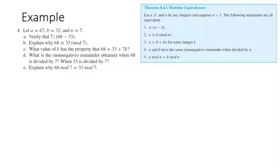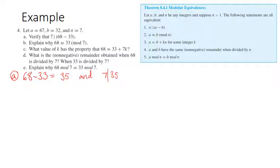For part a, we want to verify that 7 divides 68 minus 33. Let's calculate 68 minus 33, which is 35. And 7 does divide 35, because 35 is 7 times 5.